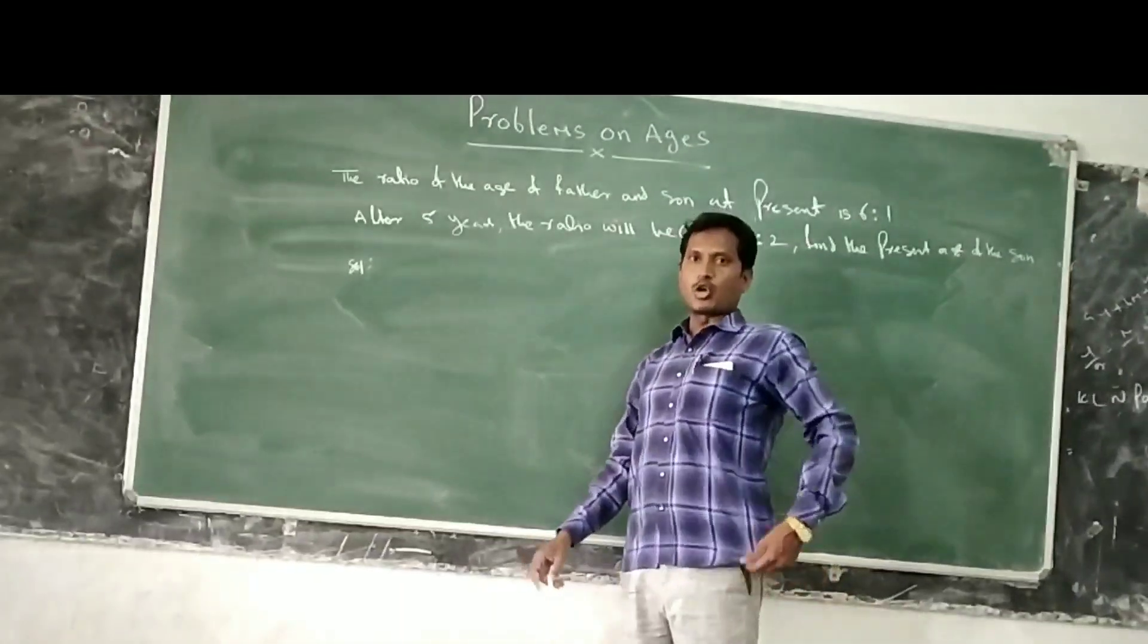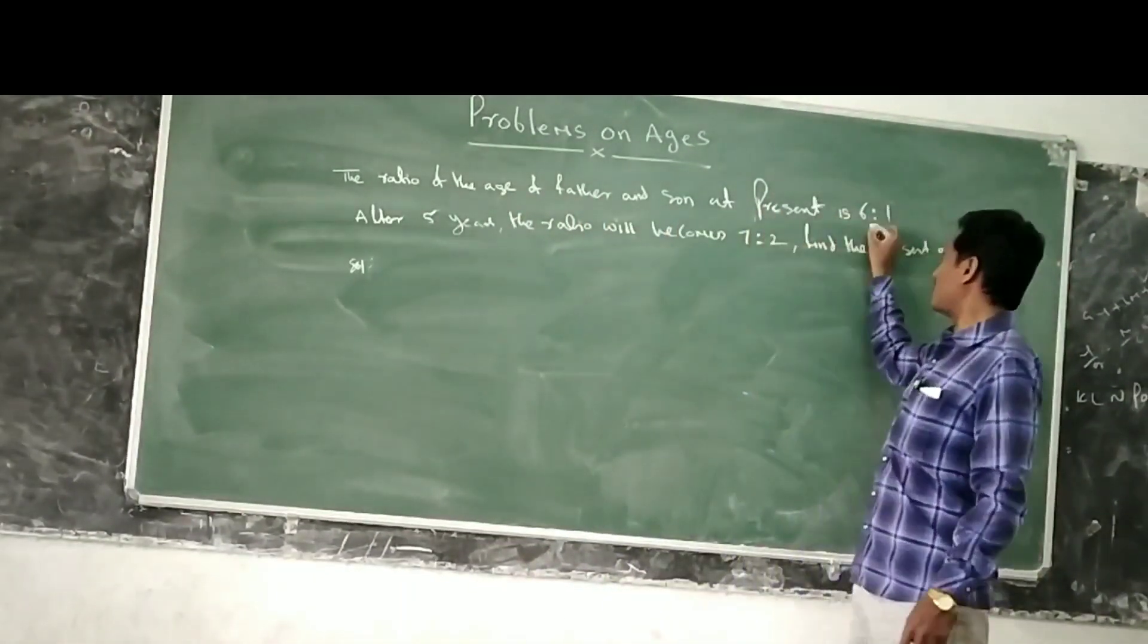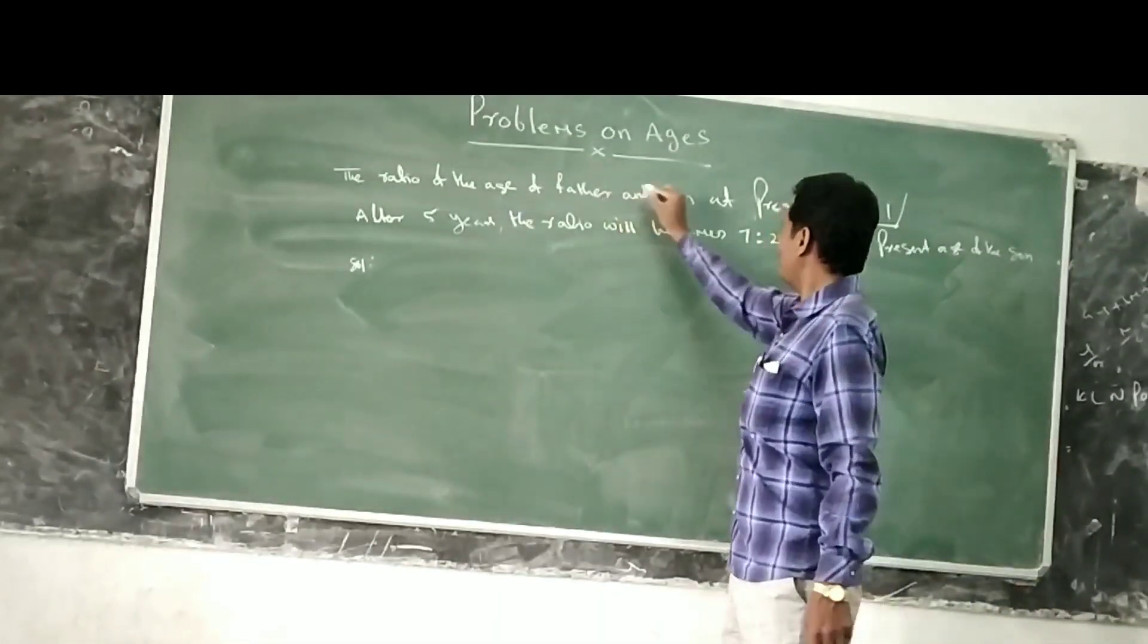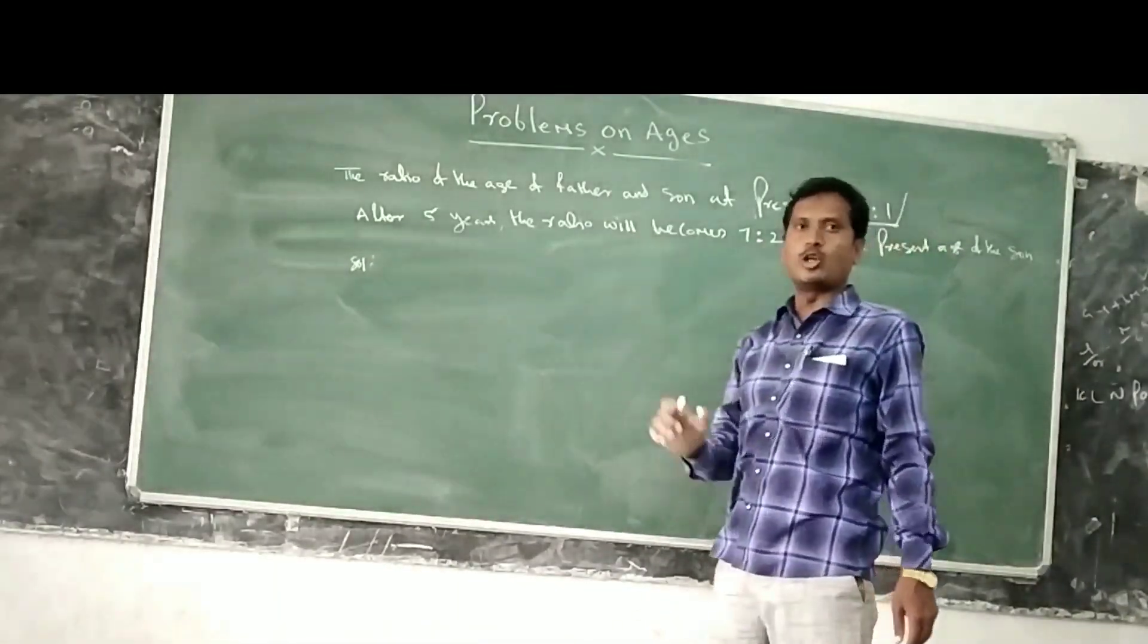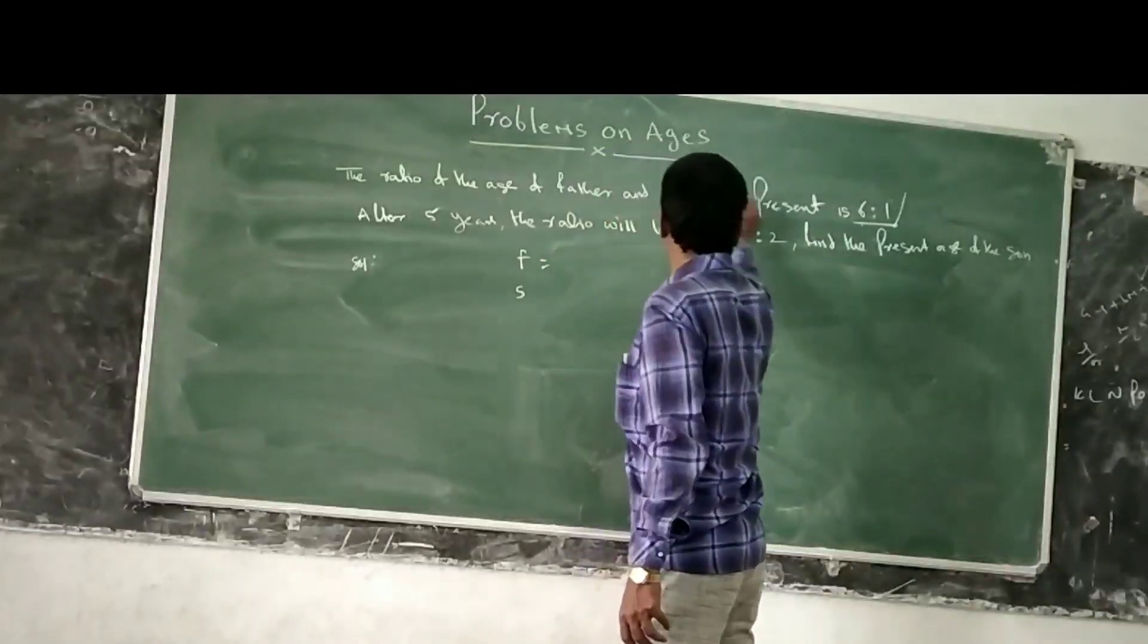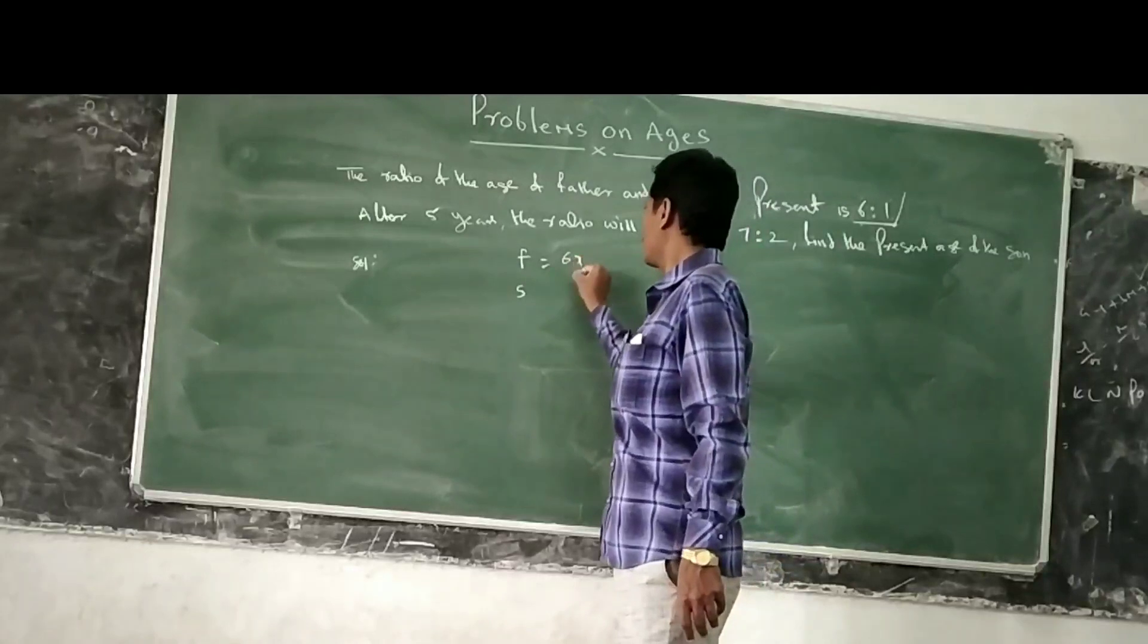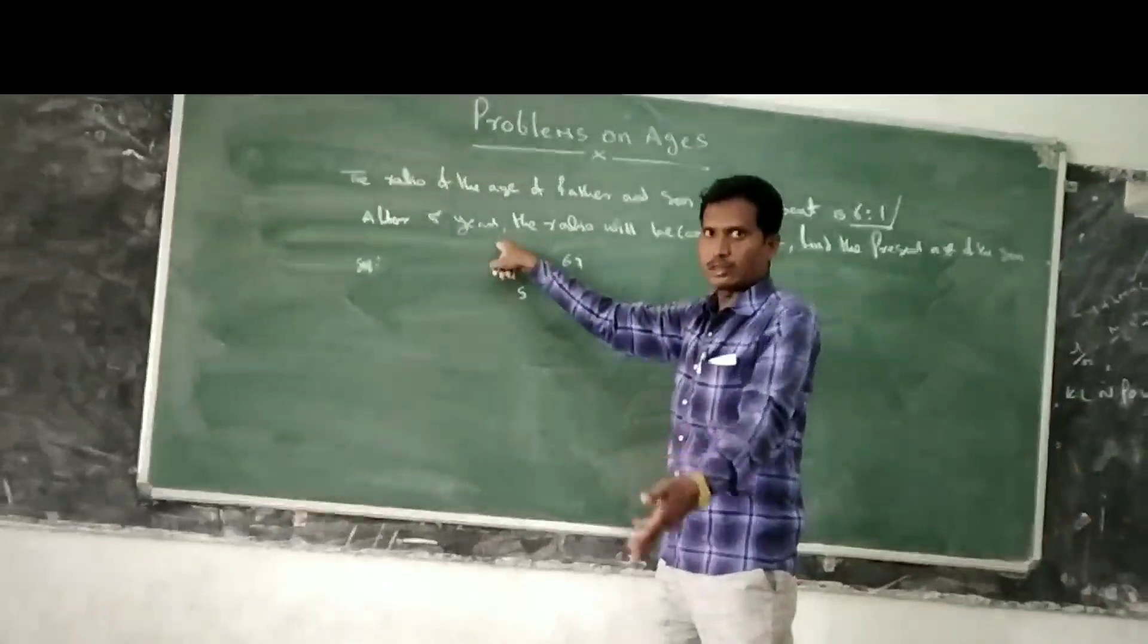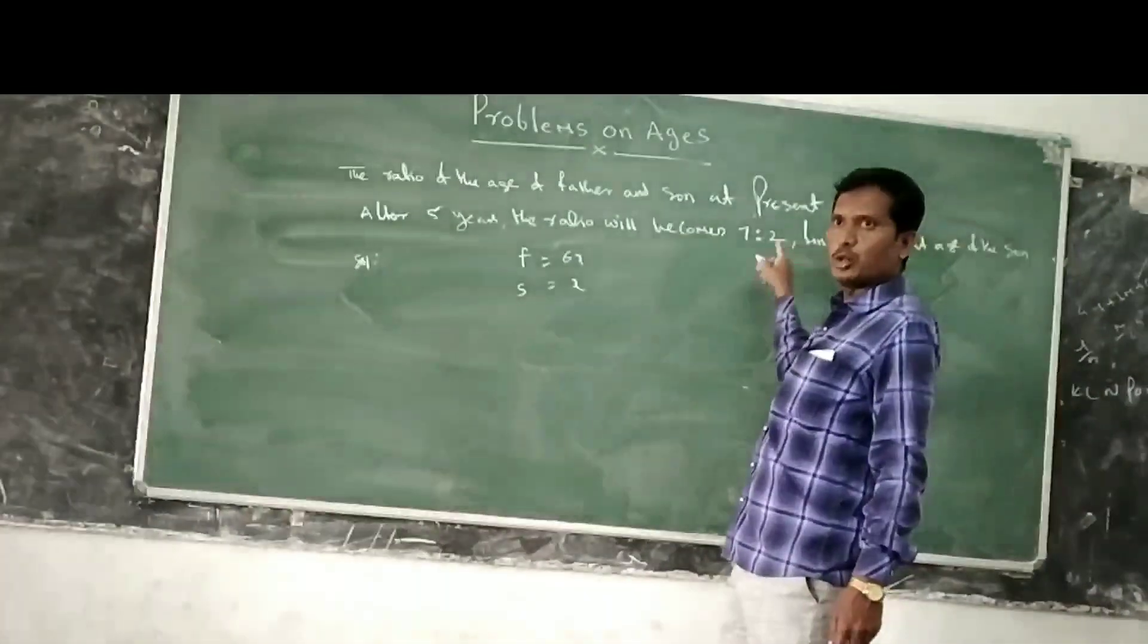Listen to the second question. The ratio of the age of father and son at present is 6 to 1. Let us take father 6x, son x. After 5 years, the ratio becomes 7 to 2.